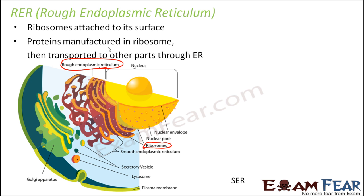Proteins are manufactured in ribosomes and then transported to other parts through endoplasmic reticulum. Since this endoplasmic reticulum contains ribosomes, which synthesize proteins, the main function of rough endoplasmic reticulum is protein synthesis and then transporting it to other parts of the cell.